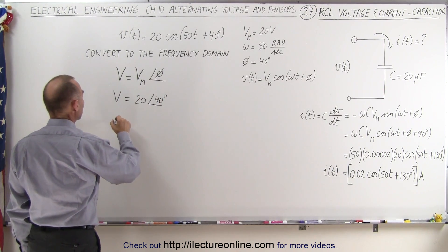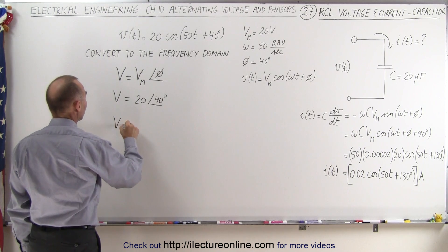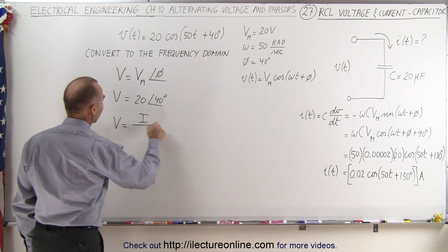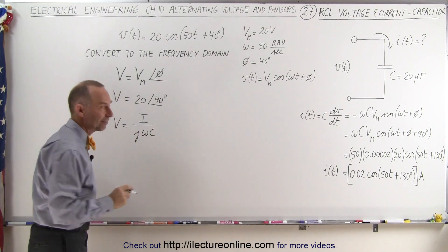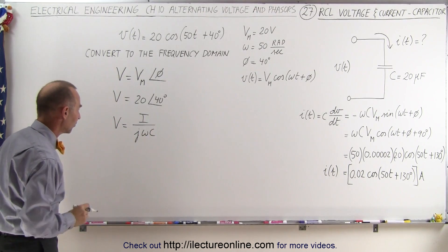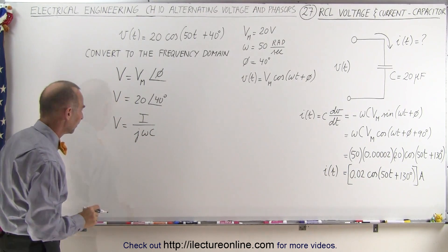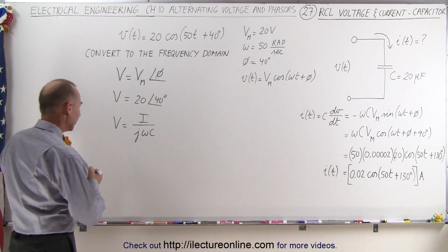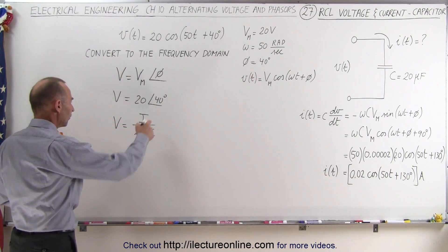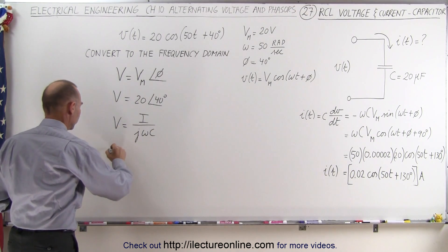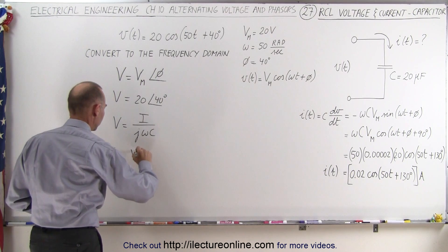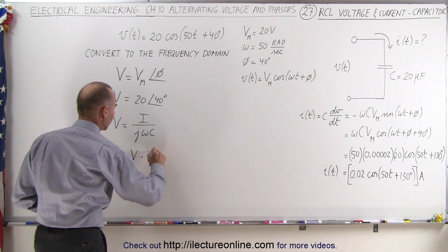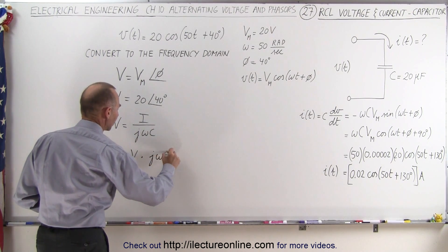The next thing we need to know is the relationship between the voltage and the current in a capacitor circuit. We can say that the voltage is equal to the current divided by j·omega·C — basically, omega·C is the reactance in the circuit across the capacitor. Once we have the equation like this, we can solve for the current in the frequency domain: I is equal to the voltage multiplied by j·omega·C.